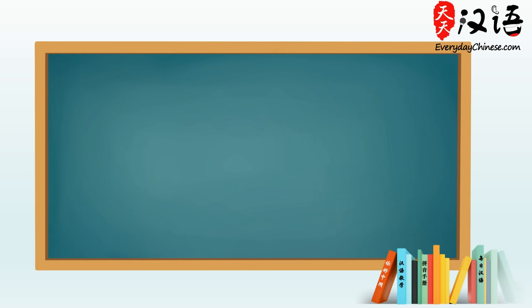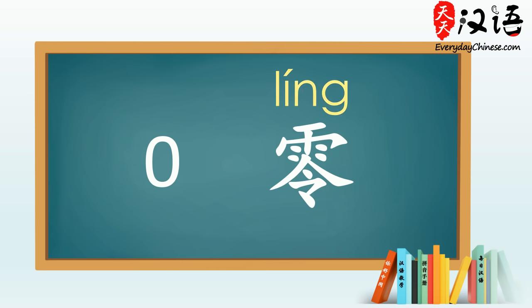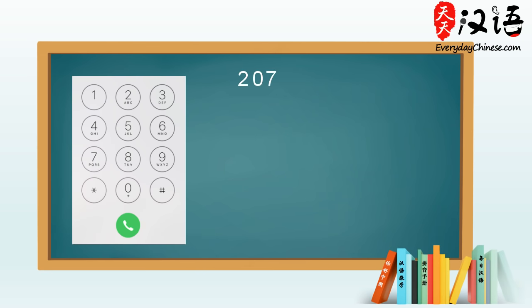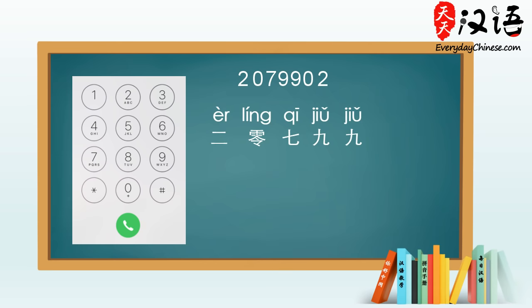If your phone number contains a zero in it, you can say 零. 零 is zero. For example, to say the phone number 2079902 in Chinese, we say 二零七九九零二. Have a listen: 二零七九九零二.